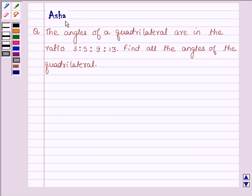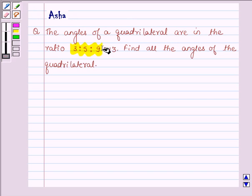Hello and welcome to the session. I am Asha and I am going to help you solve the following question: the angles of a quadrilateral are in the ratio 3:5:9:13. Find all the angles of the quadrilateral.